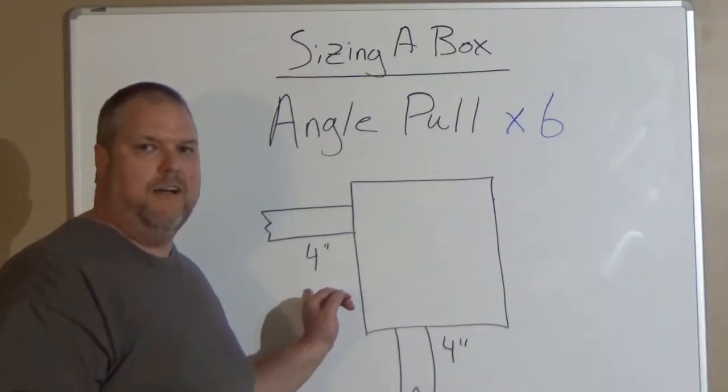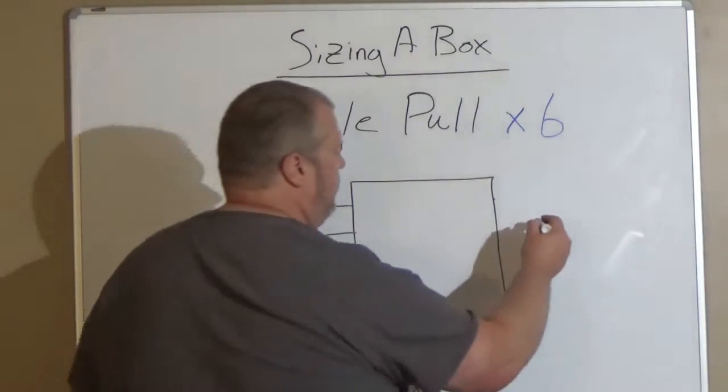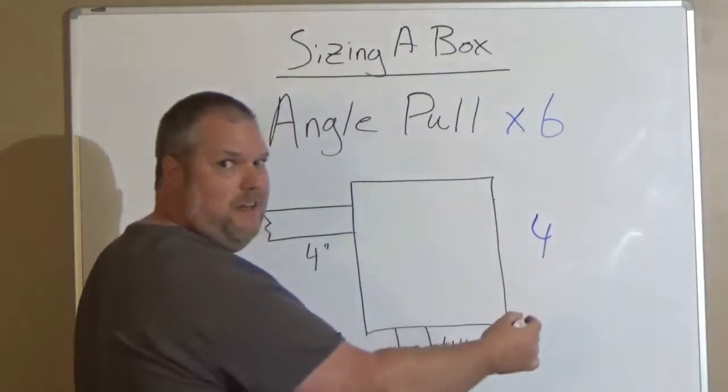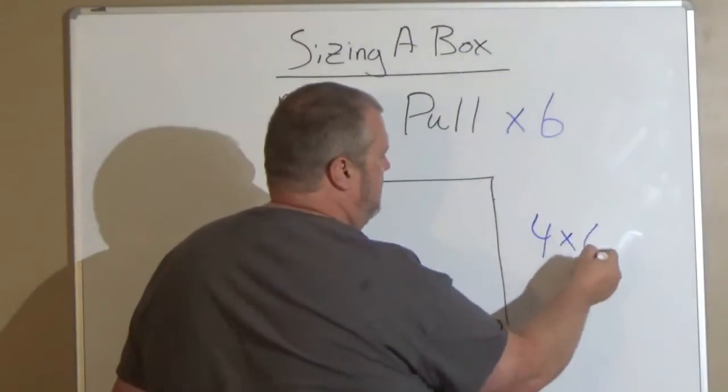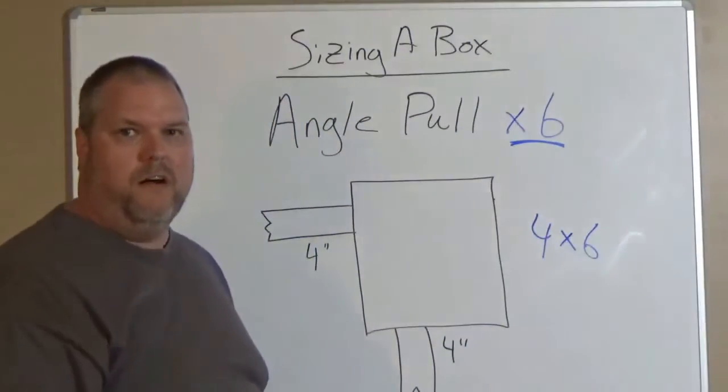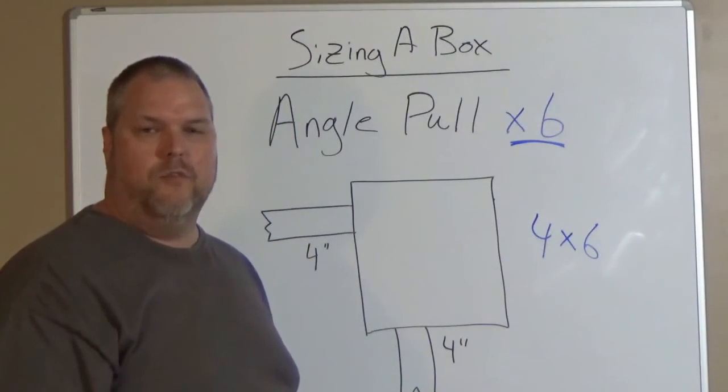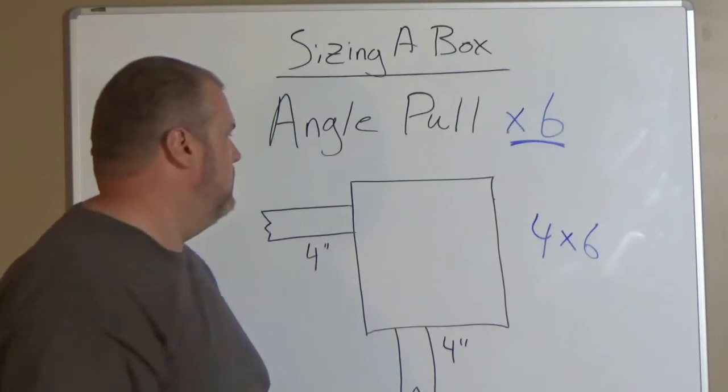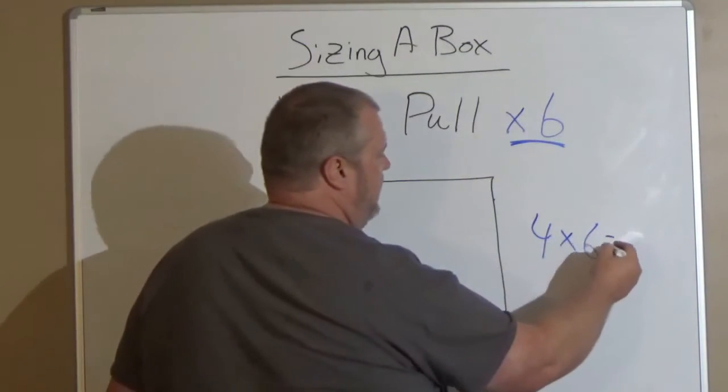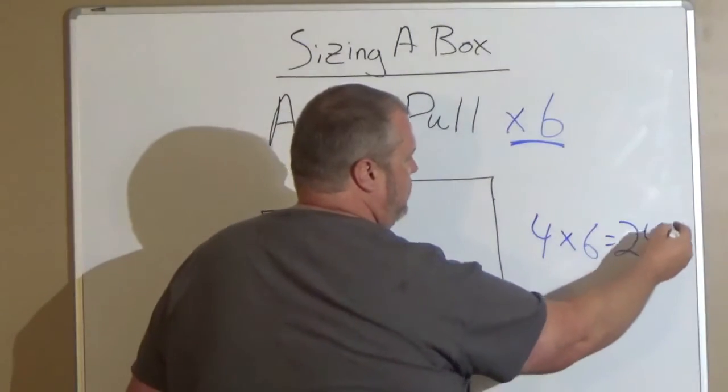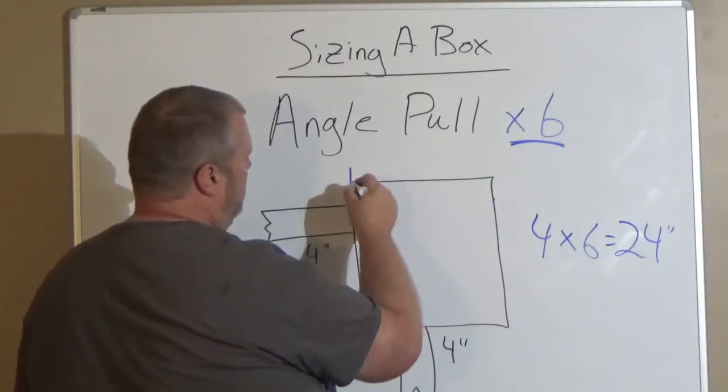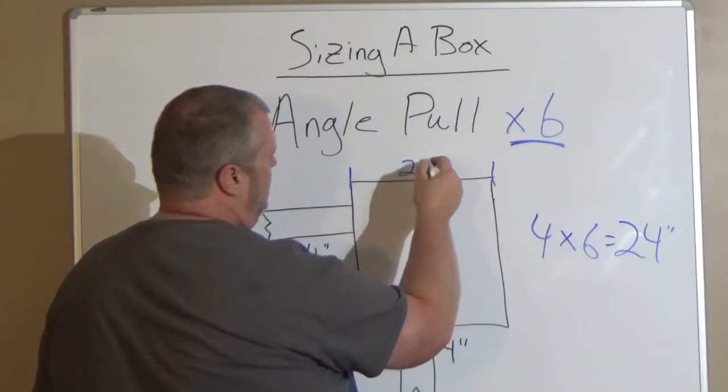My 4-inch conduit has to be sized, so I have to do 4, because that's the size of my conduit, times 6, because that's my multiplier according to Article 314.28A2. That's going to give me 24 inches. So this junction box has to be 24 inches.